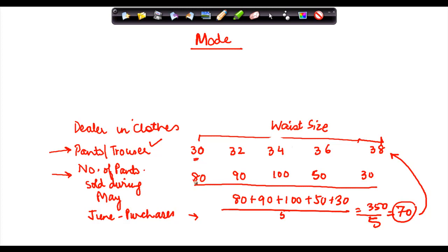Because for 30 size, he actually needs 80. For 32, he needs 90. So people who came to buy say 30 waist size, because he will buy 70 trousers of the waist size 30, 10 customers here will go back without buying anything.